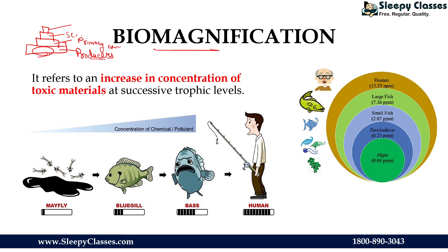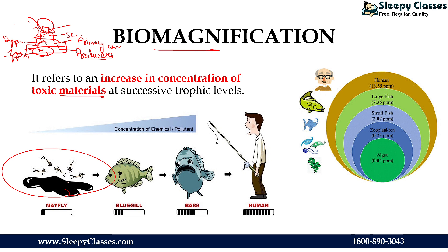What are toxic chemicals? Their concentration at one level is, let's say, 1 ppm. When consumed by the next level, the concentration increases to 2 ppm. The concentration of toxic chemicals increases at each trophic level — this is why we call it biomagnification.